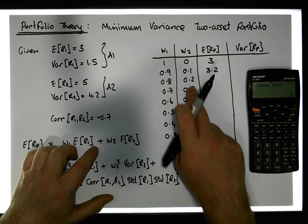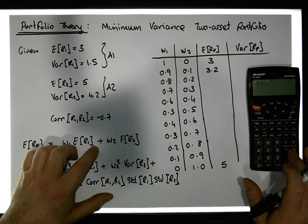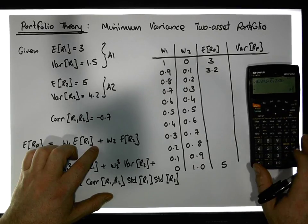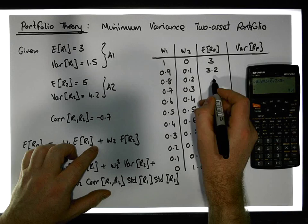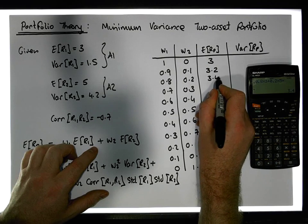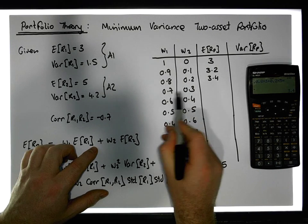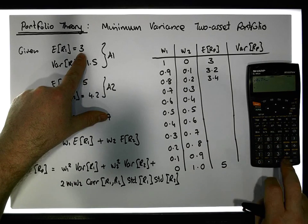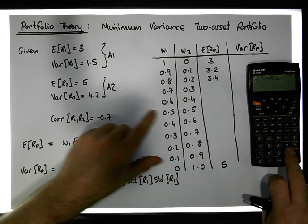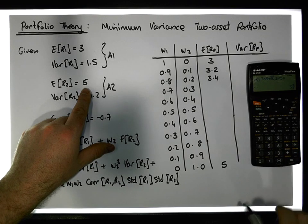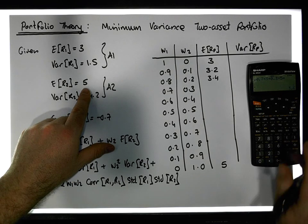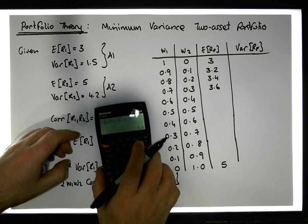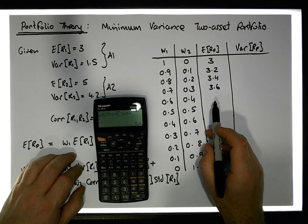For an 80/20 mix it's 0.8 times 3 plus 0.2 times 5, which gives us a value of 3.4. The next one is a 70/30 mix: 0.7 times 3 plus 0.3 times 5, which gives us a value of approximately 3.6, or a 3.6% return.